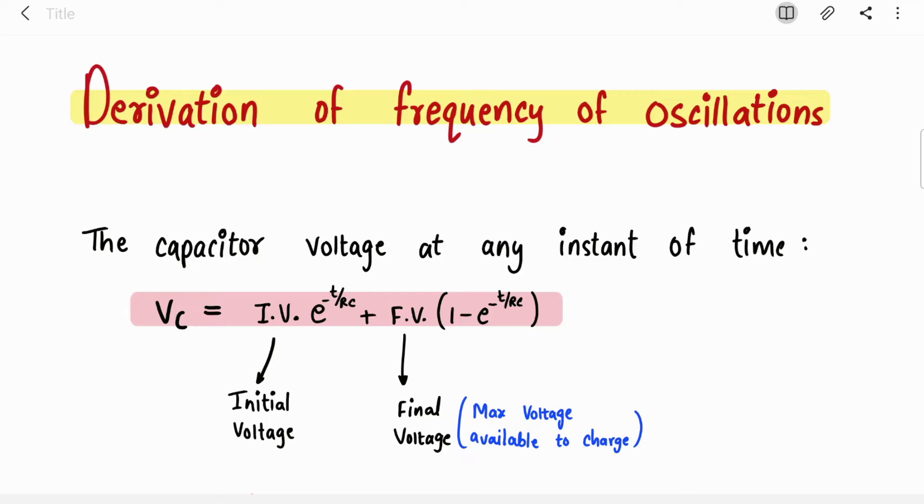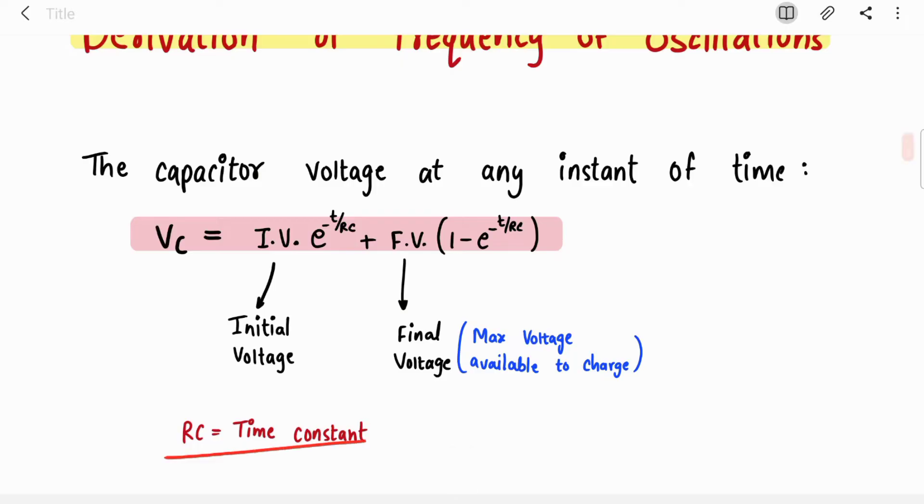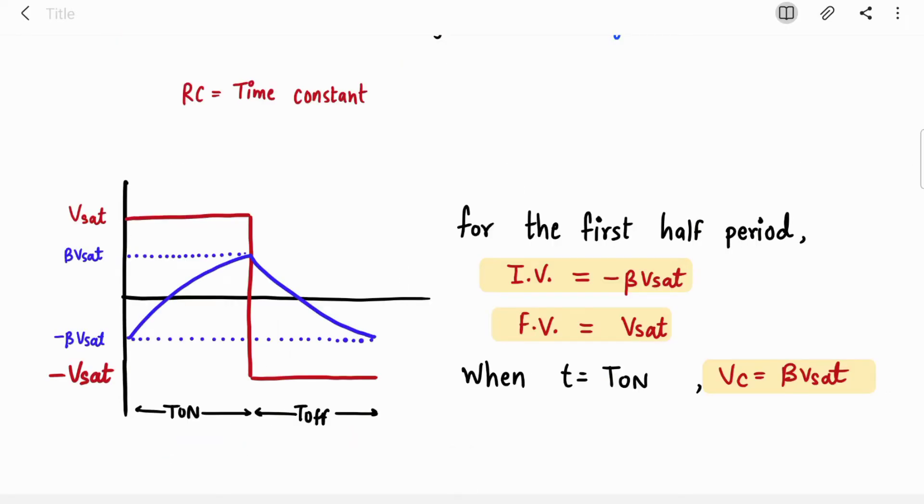The equation for finding the voltage of capacitor at any instant of time is VC equals IV, which is the initial voltage of capacitor, times E raised to minus T upon RC, plus final voltage times 1 minus E raised to minus T upon RC. Here RC is your time constant.